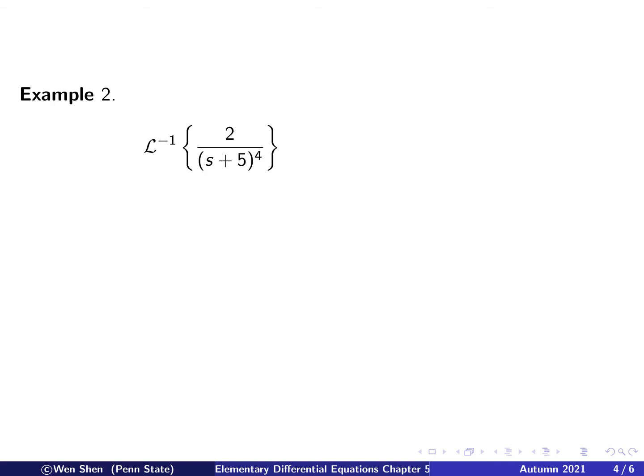Here's our next example. I want to find the inverse transform of this function 2 over (s + 5) to the power 4. So what could be a good candidate? Look at the denominator. I have an s + 5 to the power 4. And s doesn't appear anywhere else. That's the only place where s appears. And it appears as s + 5.